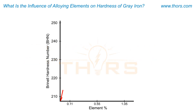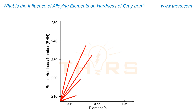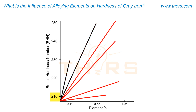This graph shows the influence of the alloying elements on the hardness level of grey iron castings. Brinell hardness values are shown on the y-axis and the alloying element content is shown on the x-axis.